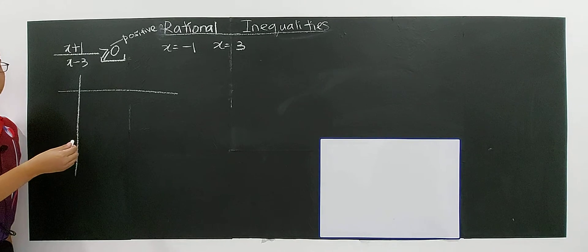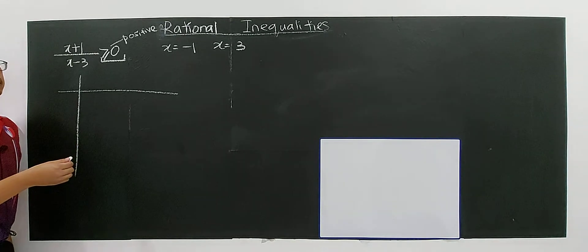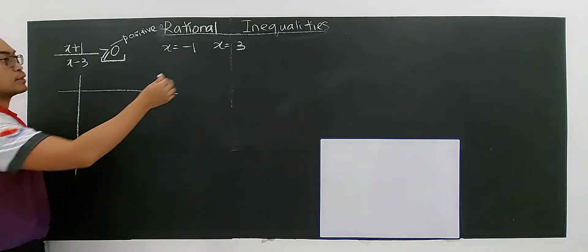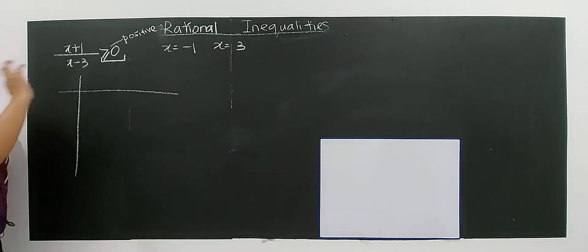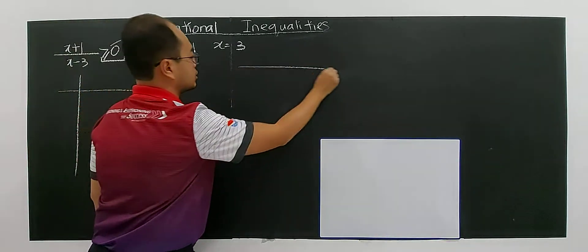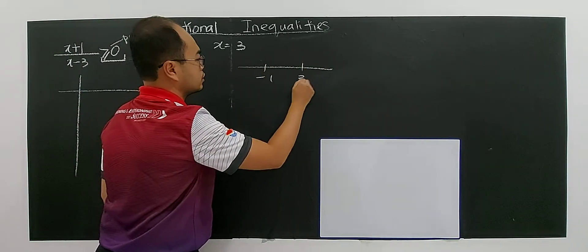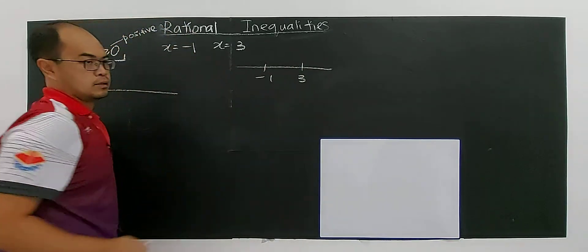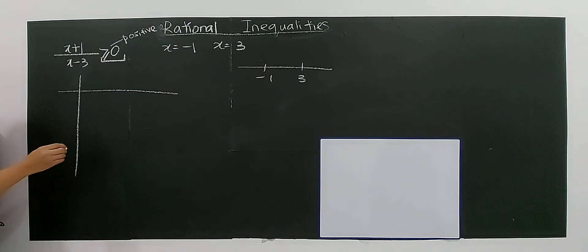I can say these are critical values. Critical values means after this point something happens - either they are changing of sign or it may remain the same. So negative one and three are the critical values here. You can divide the region into negative one and three, after three, in between, and before.